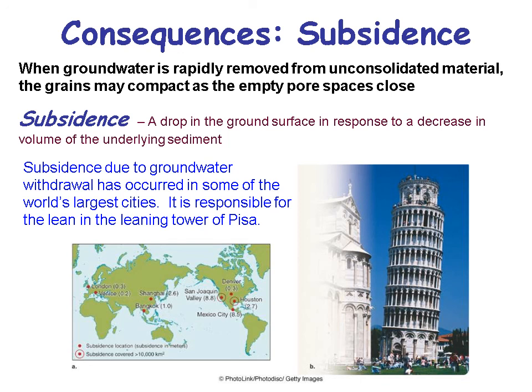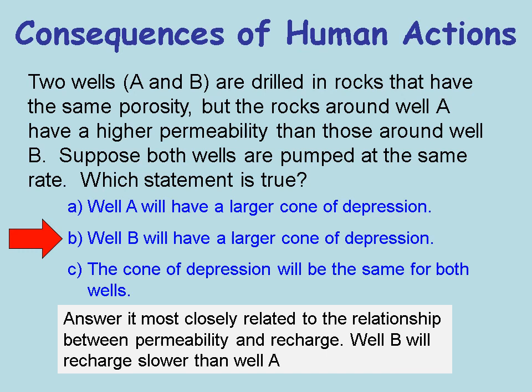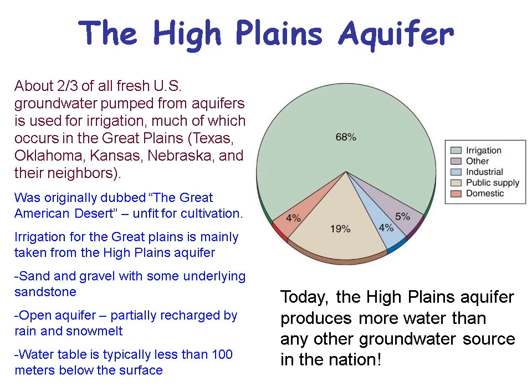Subsidence is something to be aware of — not to fear, but if you're ever in a position planning water resource management or in the political arena, you need to pay attention to it. Consider two wells A and B drilled into rocks with the same porosity, but well A has higher permeability. If both are pumped at the same rate, well B will have the larger cone of depression because it recharges more slowly than well A — well A refills quicker, so its cone of depression doesn't stay low as long.